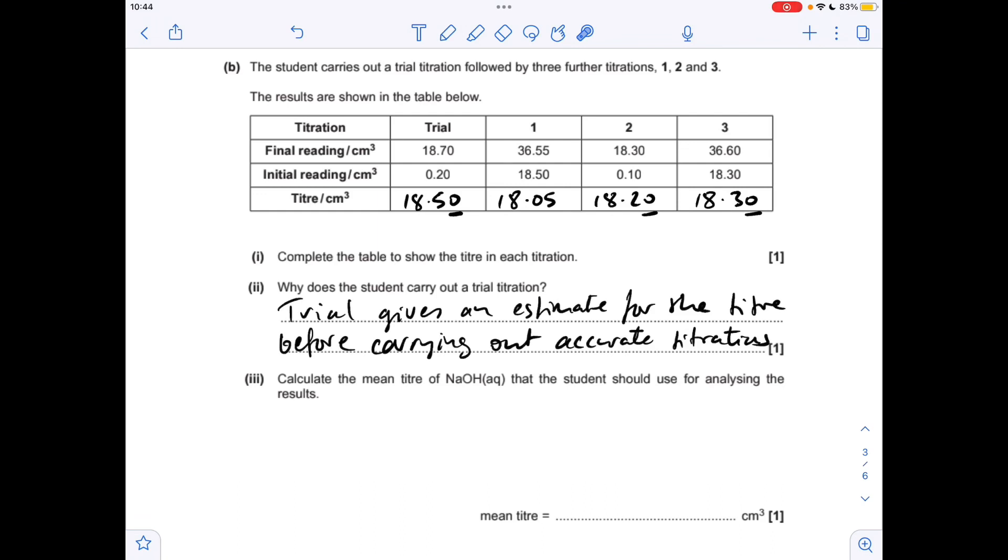And the next part, the calculation of the mean. Just remember you never ever use the trial. Within these accurate titrations we're looking for concordant results, so we're looking for results within 0.1 of each other, and obviously they're the concordant ones. So we're not going to use this one; we are going to use these, which gives a mean titre of 18.25 cm³.